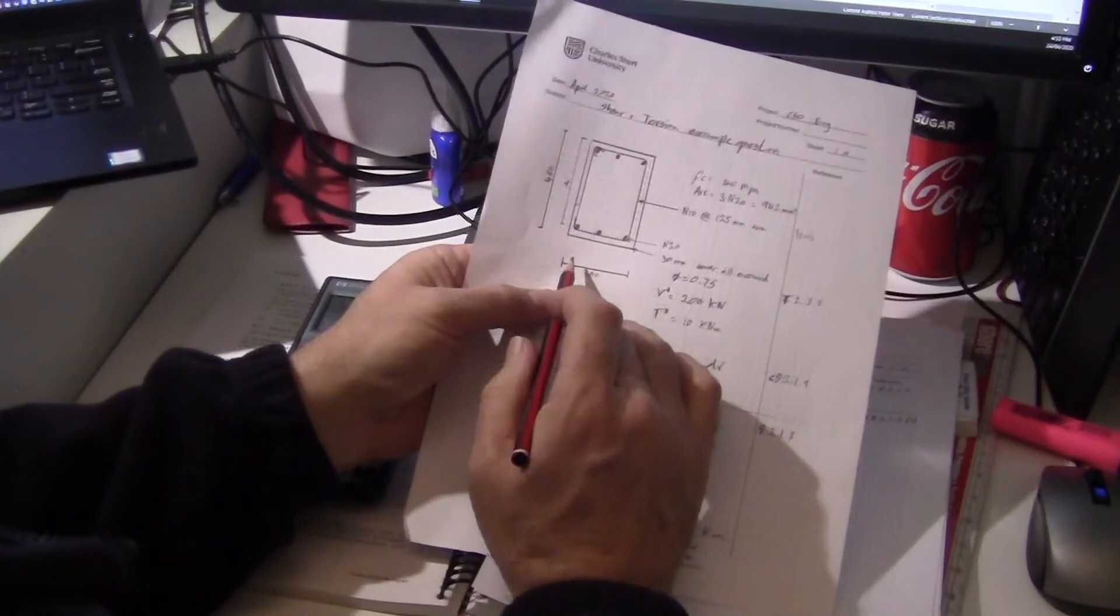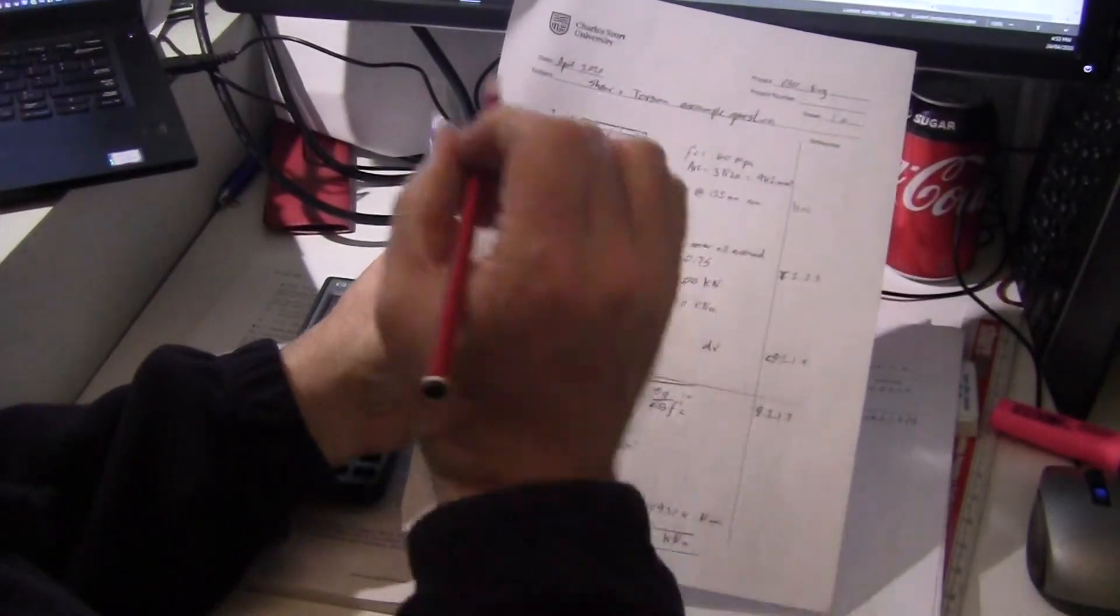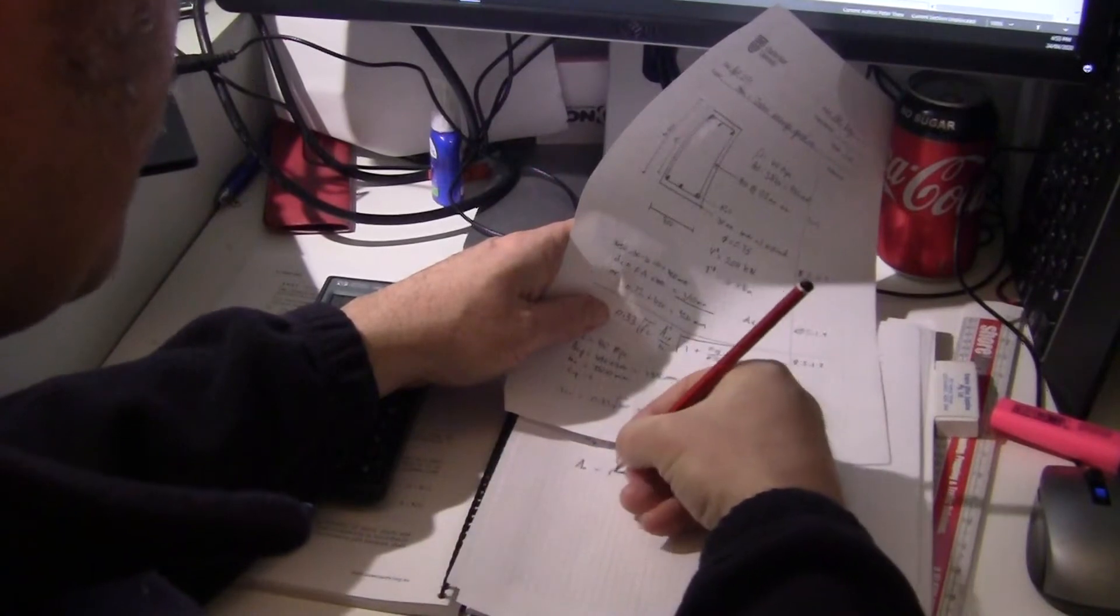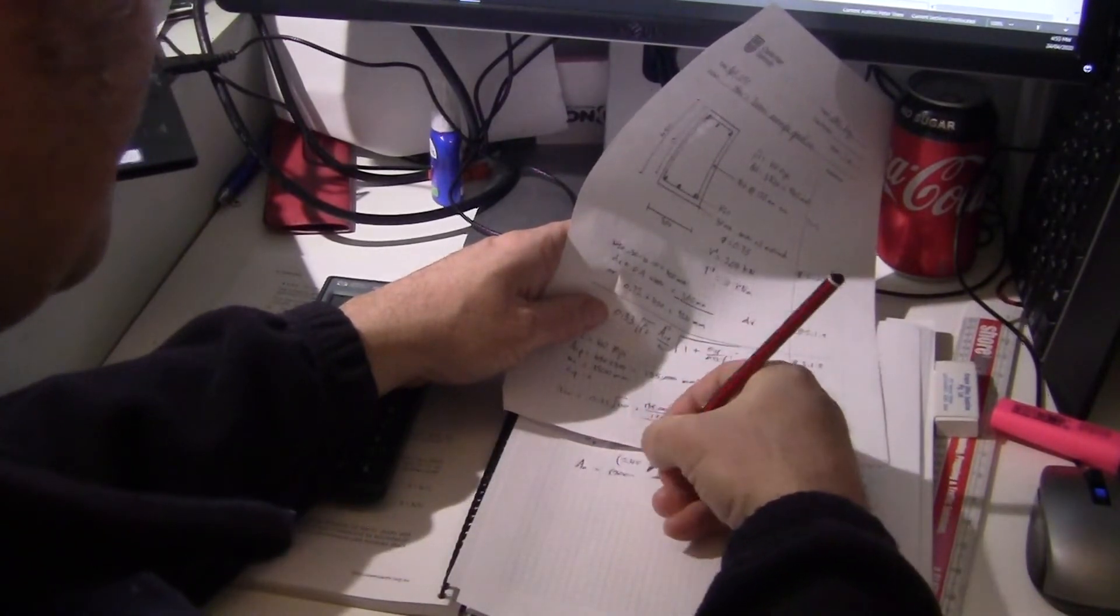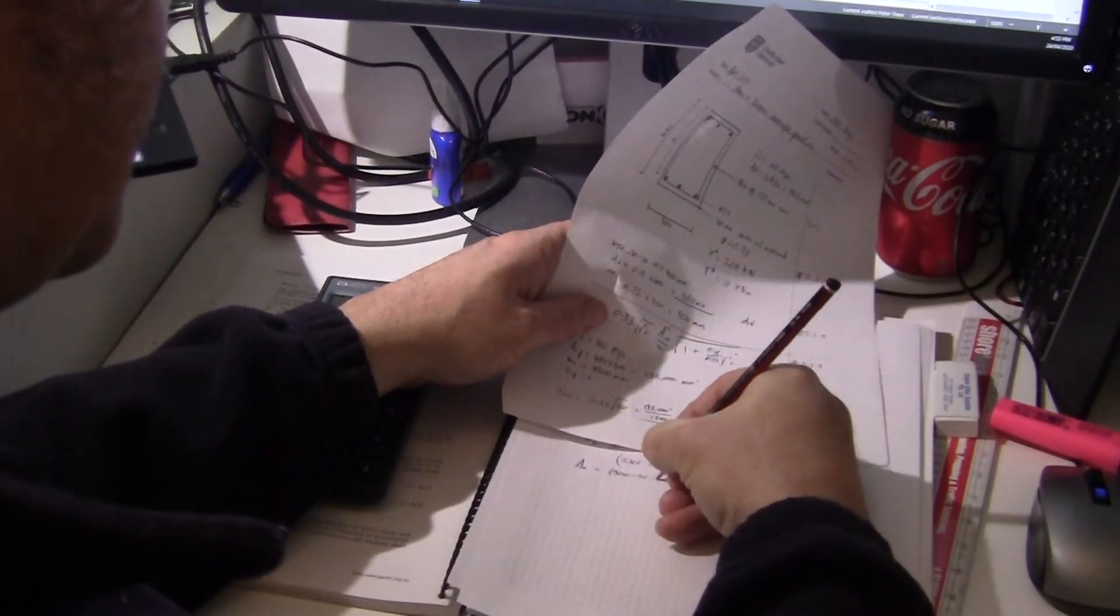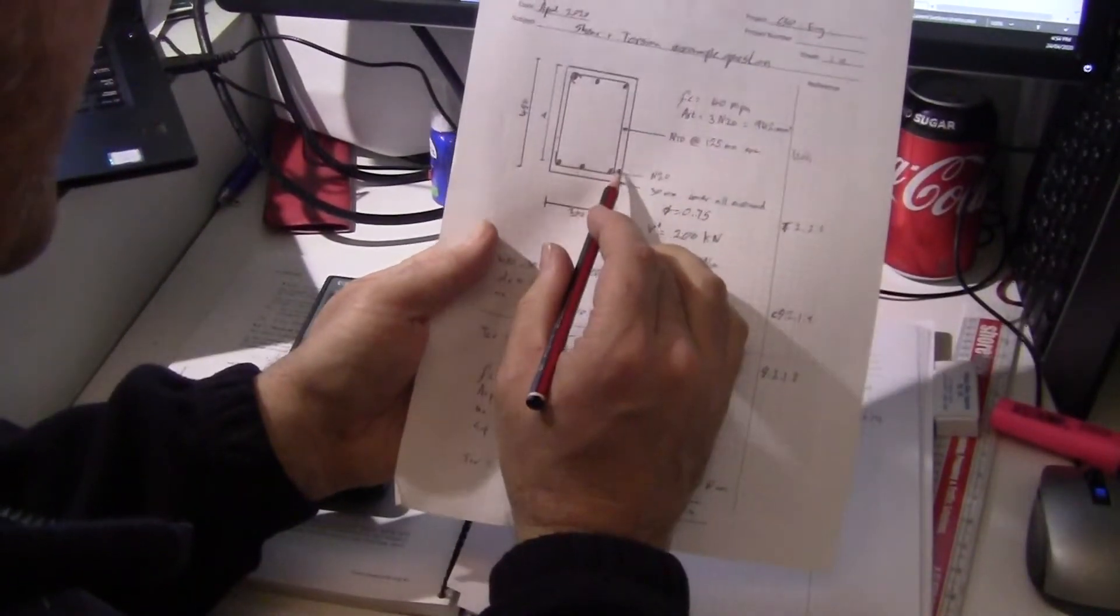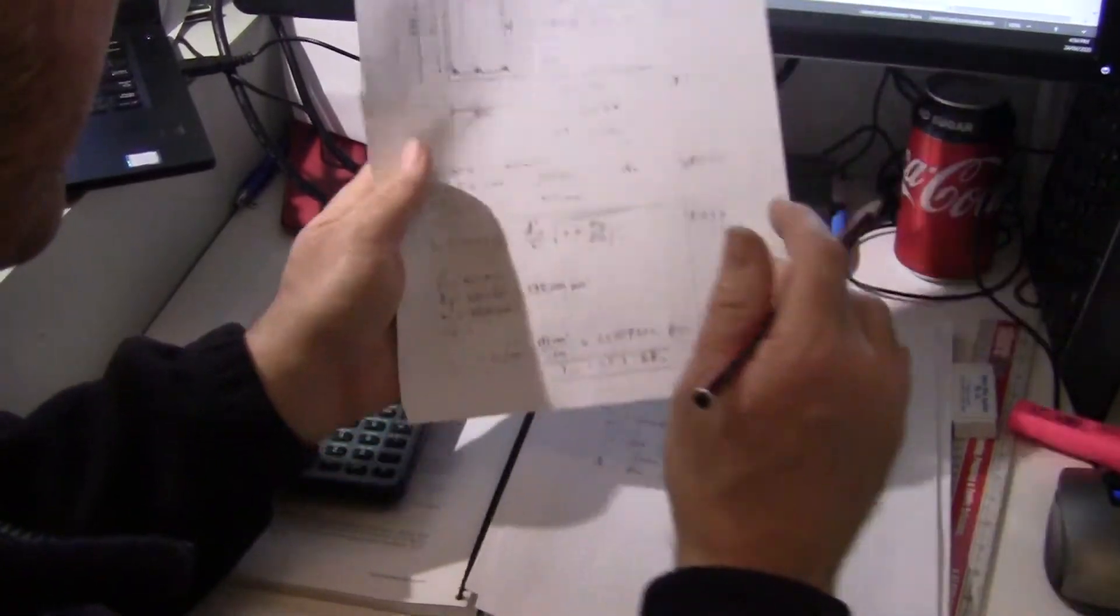So that is 300 minus 30. We'll also go to the centerline of the ligature this time. So that is 300 minus 30 minus 30 minus 5 minus 5. That's the 30 on that side, the 30 on that side, and 5 is half of that 10 mil bar.